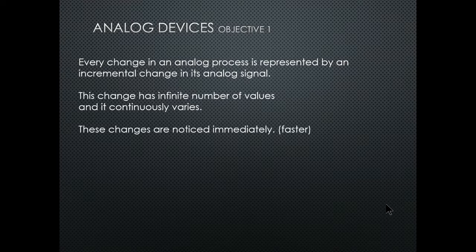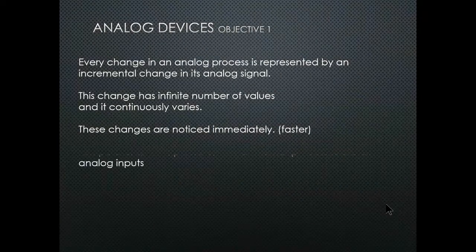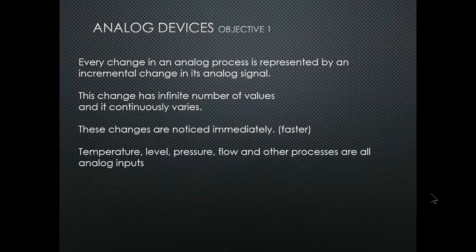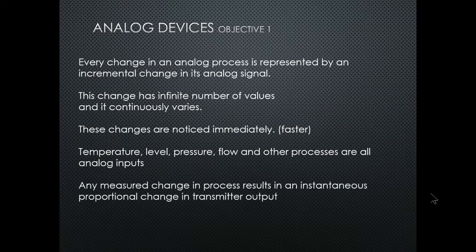In the true sense, analog is faster. Temperature, level, pressure, flow, and other processes are all analog inputs. Any measured change in a process results in an instantaneous proportional change in the transmitter output, providing that the transmitter is zeroed and spanned correctly.